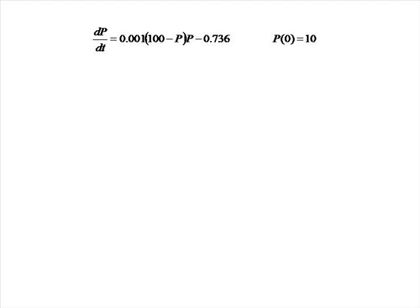In this question we're going to be looking at a differential equation that corresponds to a population of grizzly bears. P is the number of bears. There are initially 10 bears, and the 0.736 on the right-hand side corresponds to a hunting rate of the bears. The 0.001 at the front of the term on the right-hand side corresponds to the growth rate.